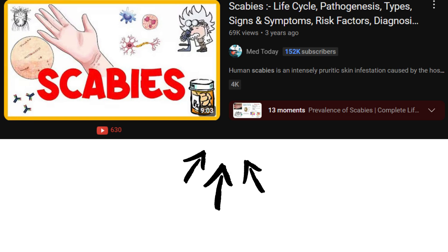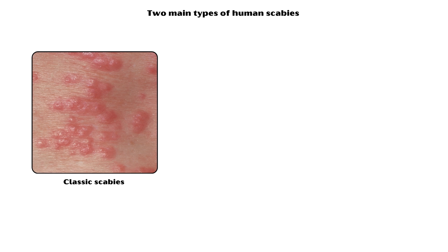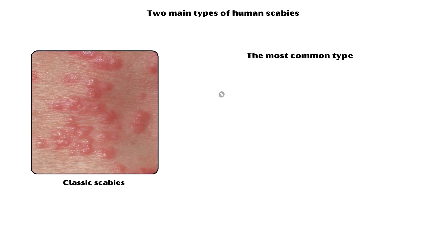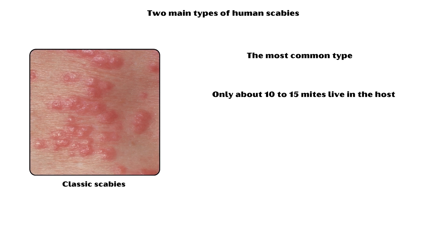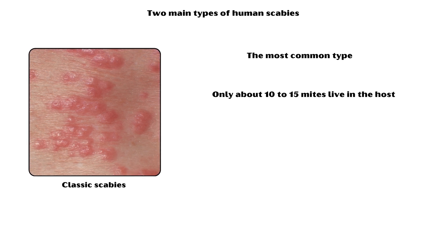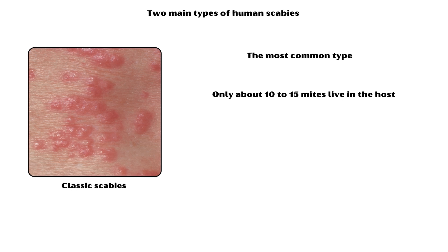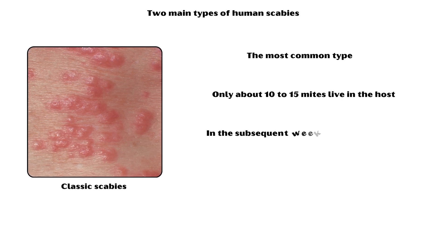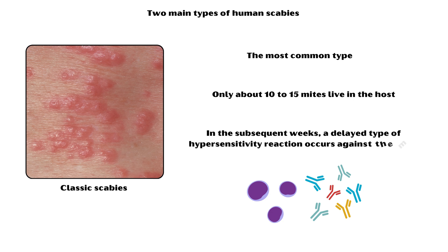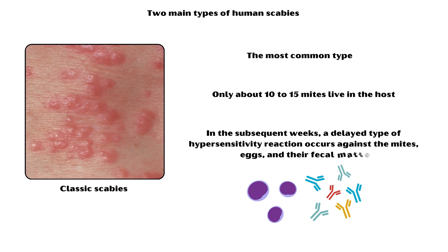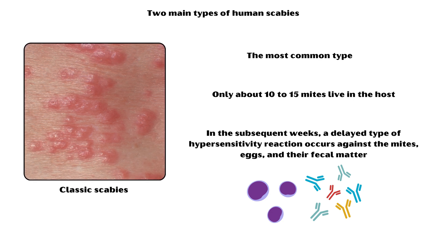For the convenience of our discussion, let's quickly recall the two main types of human scabies. In classic scabies, which is the most common type, only about 10 to 15 mites live in the host. During the first month of the infection, only a little evidence of infection exists. However, in the subsequent weeks, a delayed type of hypersensitivity reaction occurs against the mites, eggs, and their fecal matter, which gives rise to intense itching associated with scabies.